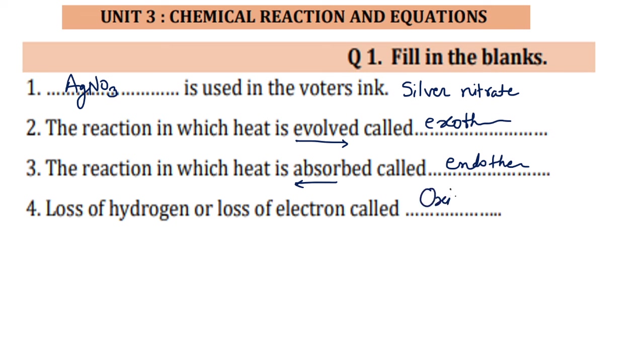Loss of hydrogen or loss of electron is the definition of oxidation. Also in another definition it is written as gain of oxygen or gain of electron. It is also called as oxidation of that element or object.